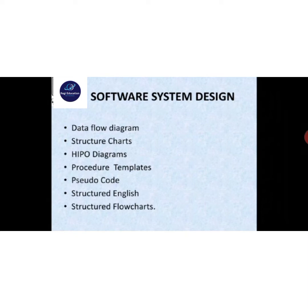Software system design contains many types. One: data flow diagram. Two: structure charts. Three: HIPO diagrams. Four: procedure templates. Five: pseudocode. Six: structured English. Seven: structured flow charts.